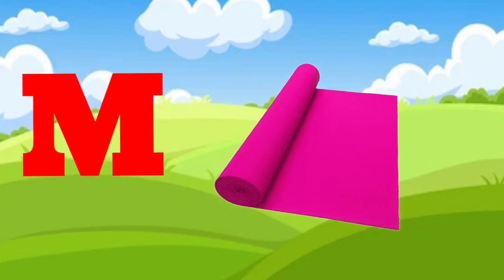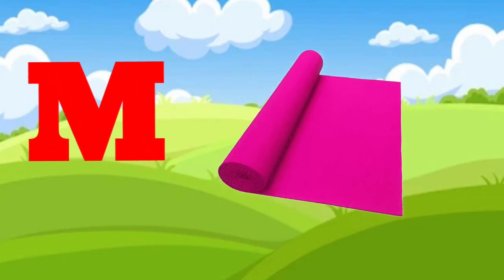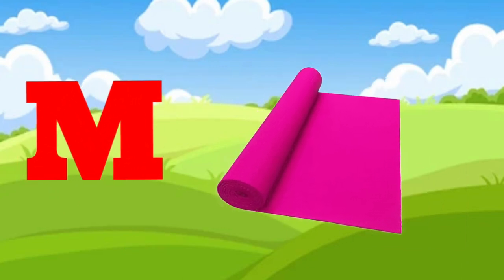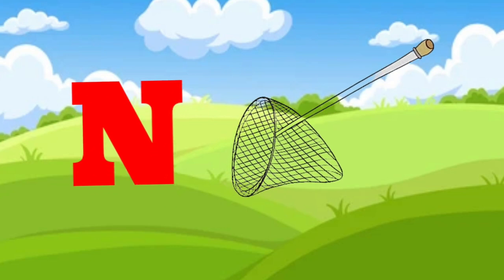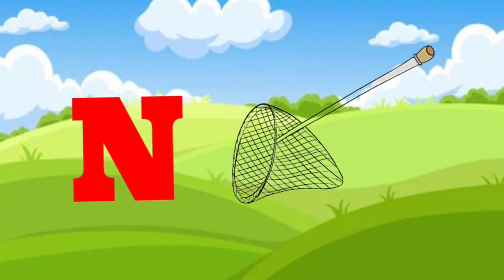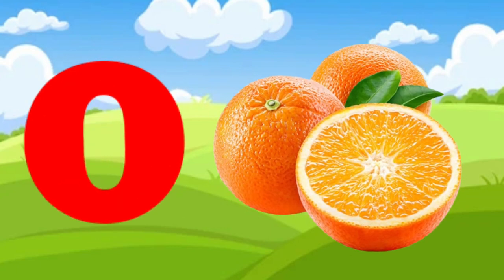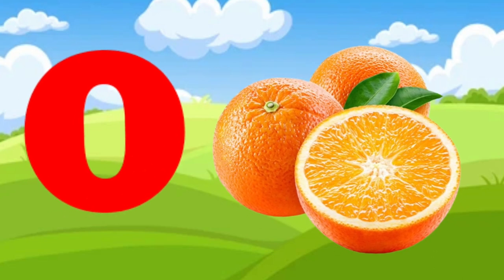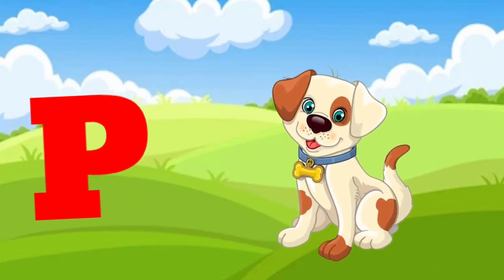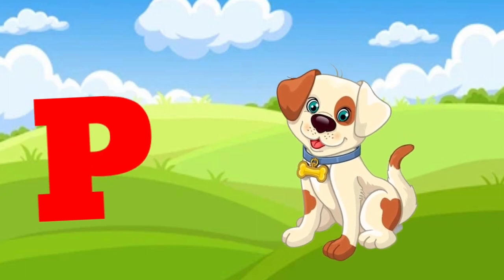M is for mat, m-m-mat. N is for net, n-n-net. O is for orange, o-o-orange. P is for pet, p-p-pet.